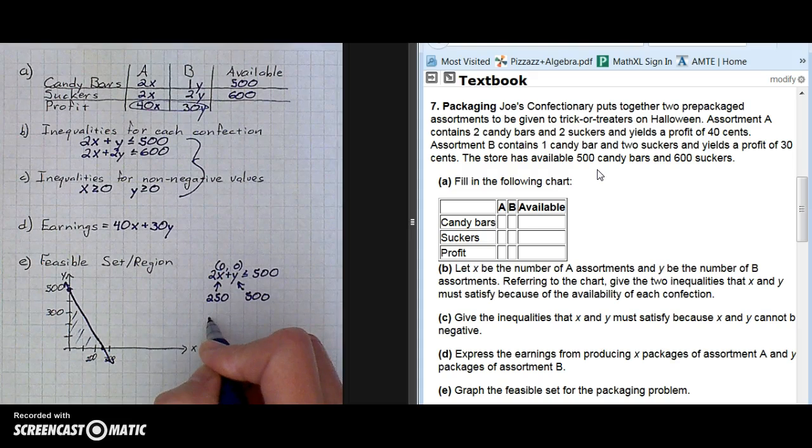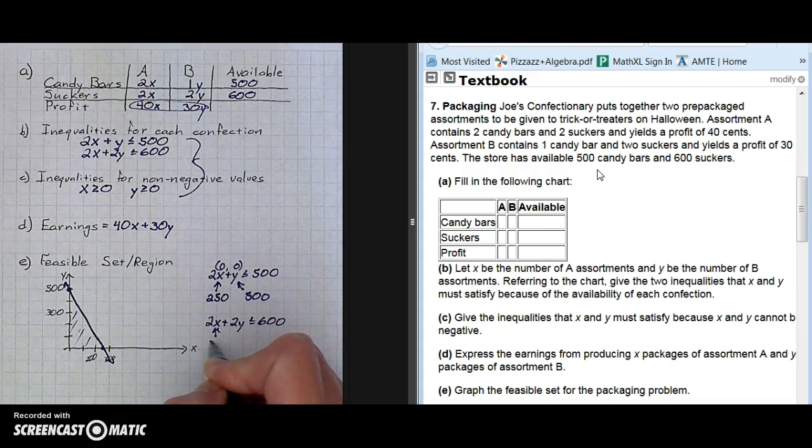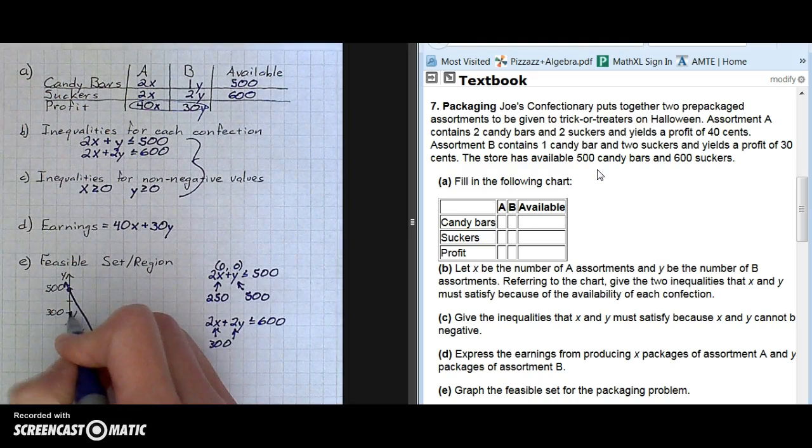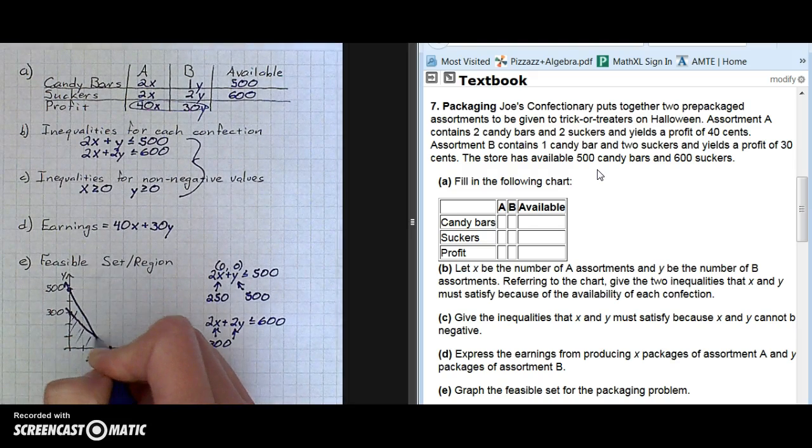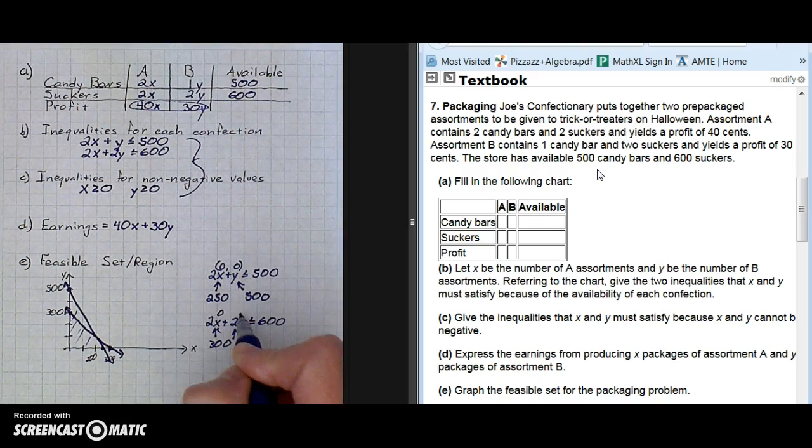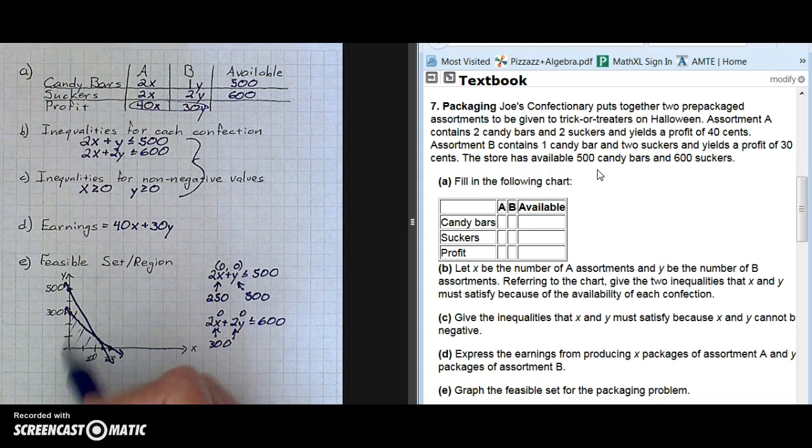The next inequality was 2X plus 2Y is less than or equal to 600. The X intercept is 300, as is the Y intercept. Using the test point of 0, 0, you can see that we get a true statement, so we would be shading down and to the left.